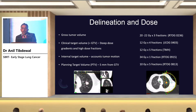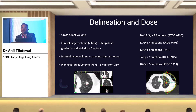For delineation and dose fractionation: the gross tumor volume is based on radiological imaging — whatever you see on CT scan — and you can take help from radiology or nuclear medicine. The clinical target volume is generally equal to the GTV with no CTV margin, due to the steep dose gradient and high dose per fraction, which takes care of microscopic disease. The internal target volume accounts for motion. The planning target volume is institution-based, generally 5 mm from the GTV. Various dose fractionation schemes are used; we use 12 Gy × 5 fractions at Tata Memorial Hospital.